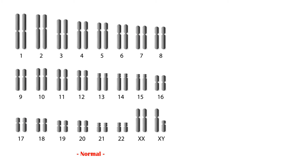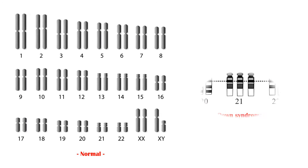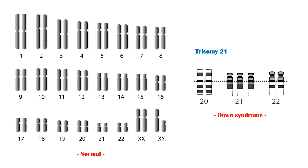Humans have 23 pairs of chromosomes in their somatic cells. Individuals with Down syndrome have an additional chromosome in their 21st pair of chromosomes, which is called trisomy 21.